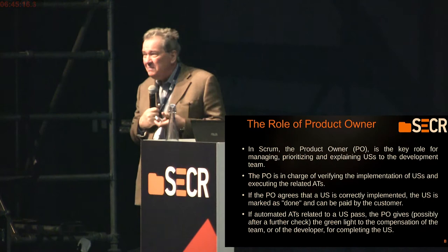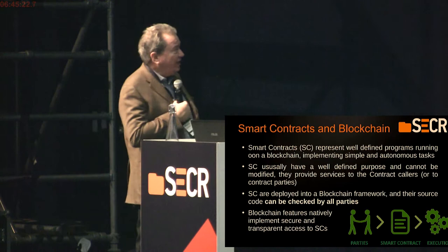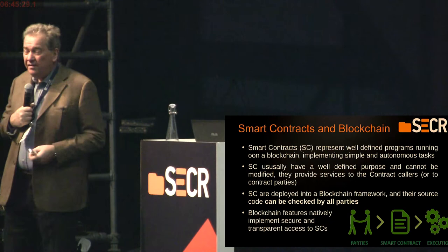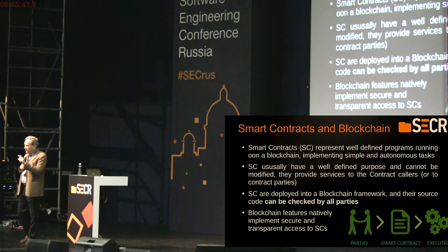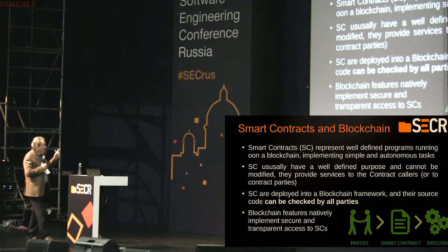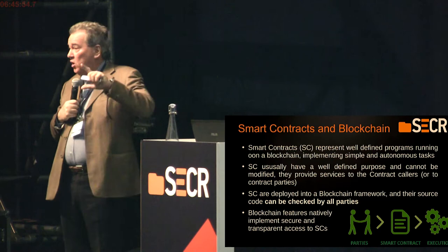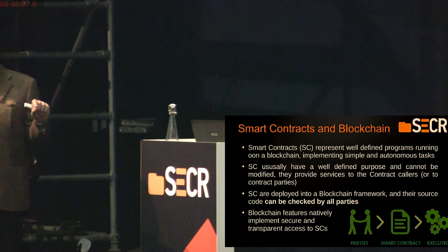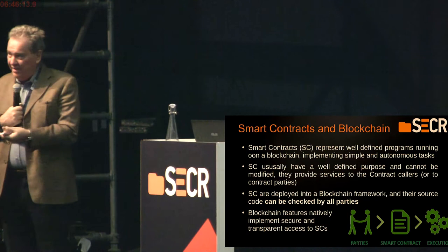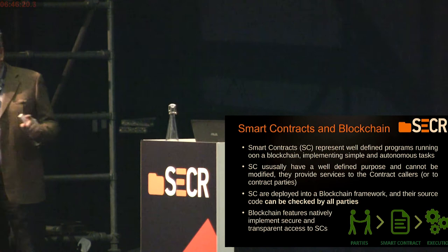Smart contracts are programs written in the blockchain, and their characteristic is that they have a well-defined purpose — in our case, to manage the development, the running of the tests, and the check that the story has been correctly implemented, and then even the payment. The smart contracts have the characteristic that they are small programs. Their source code can be checked by everyone, and when they are deployed to the blockchain, they cannot be changed by anyone. So they are a transparency tool — if I check that the smart contract actually works as it should, I can be sure that no one can tamper with or change it.